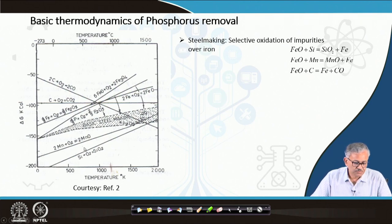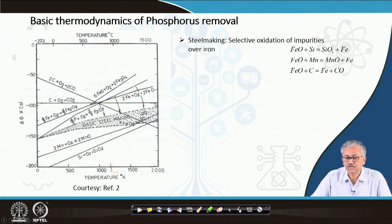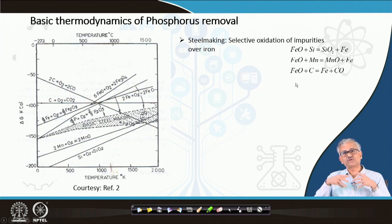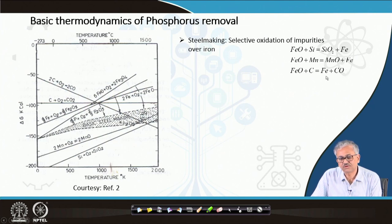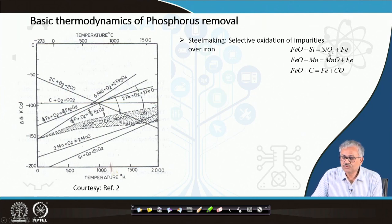From the Ellingham diagram, silicon oxide and manganese oxide are stable compared to FeO even at high temperature, and CO is also much more stable compared to FeO. So all these impurity oxides are basically more stable compared to iron oxide. Even though iron oxide forms fast, the impurities will reduce iron oxide to iron and themselves be oxidized to SiO2, MnO, and CO. CO is a gaseous product, so it will go away from the system, and this reaction will always move in the forward direction. SiO2 and MnO have to be retained in the slag for the reaction to continue in the forward direction.